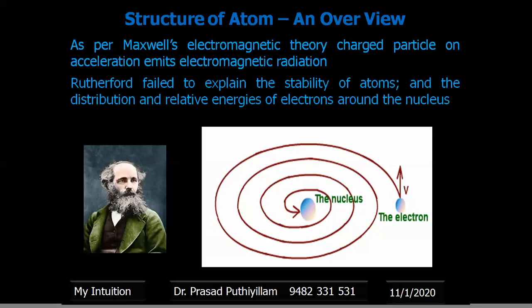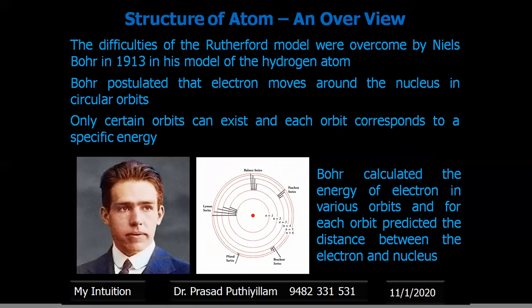These difficulties of Rutherford's model were overcome by Niels Bohr in 1913 with his model of the hydrogen atom. Bohr postulated that electrons move around the nucleus in circular orbits, and only certain orbits can exist, each corresponding to a specific energy. He also introduced spectral series like the Lyman series, Balmer series, Paschen series, Brackett series, and Pfund series, and was able to calculate exactly the distance between the electrons and the nucleus.